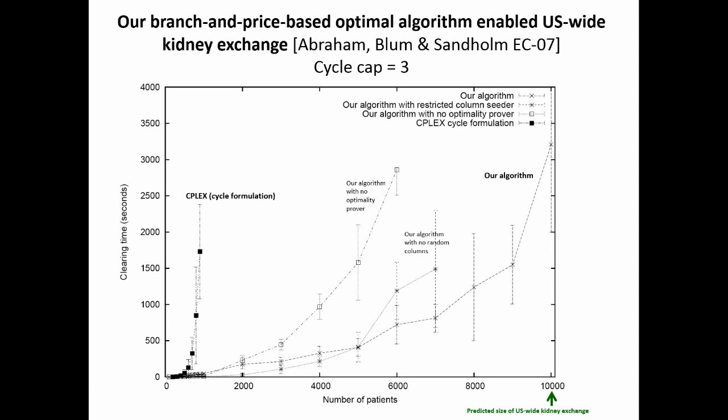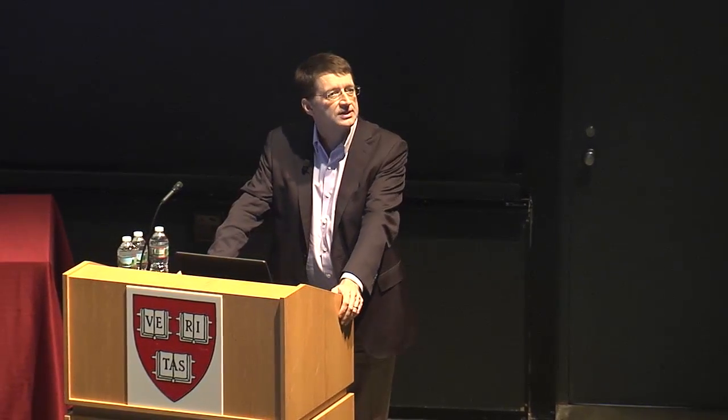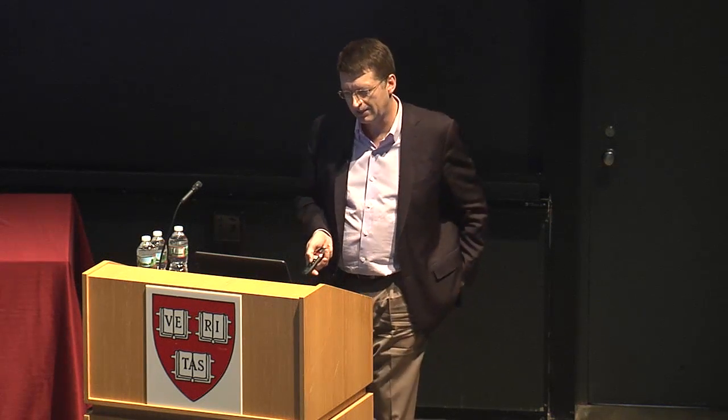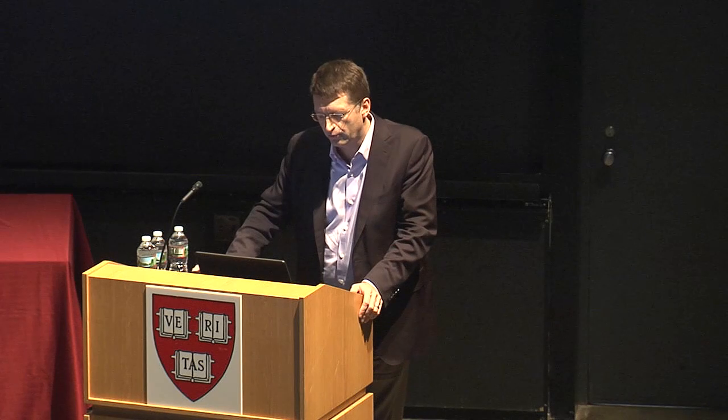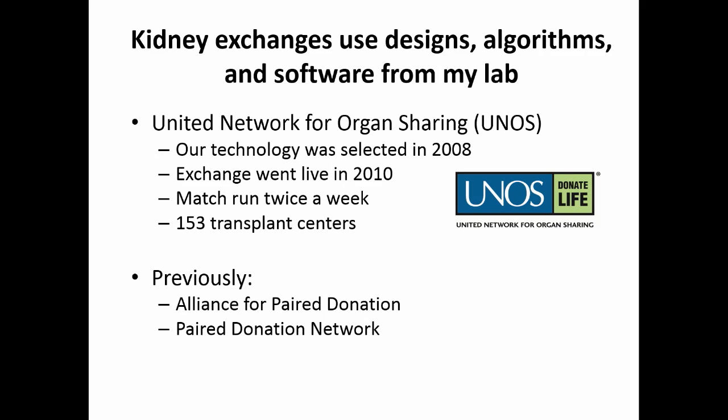The approach we use is called branch and price — like branch and bound, except there are too many cycles to include in the model upfront. So we incrementally generate cycles into the model on an as-needed basis until we can prove optimality. This algorithm was selected by the United Network for Organ Sharing, which controls all transplants in the US, for their plan to start a nationwide kidney exchange. It was selected in 2008 and went live in October 2010, running matches twice a week.